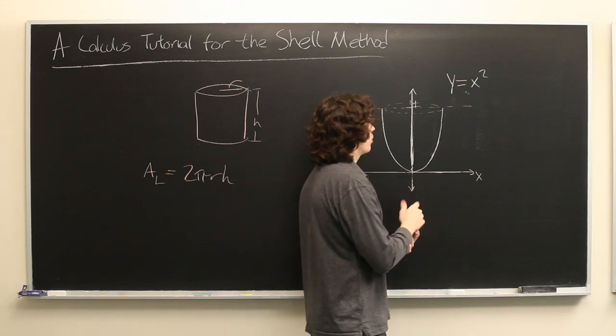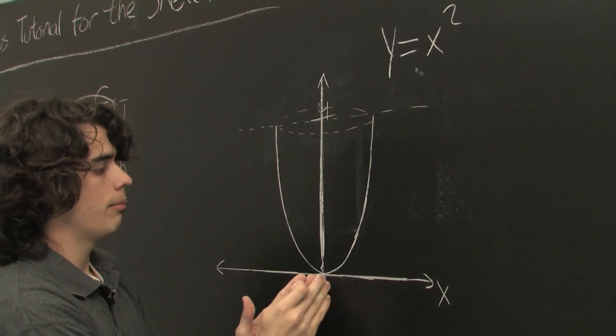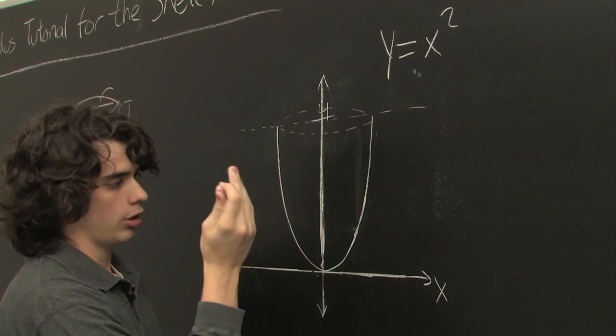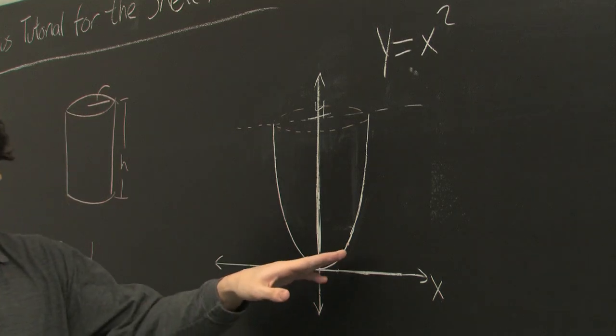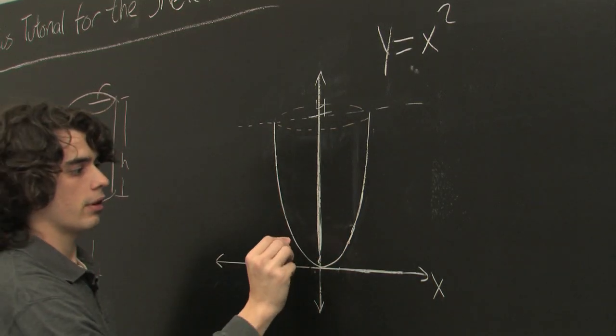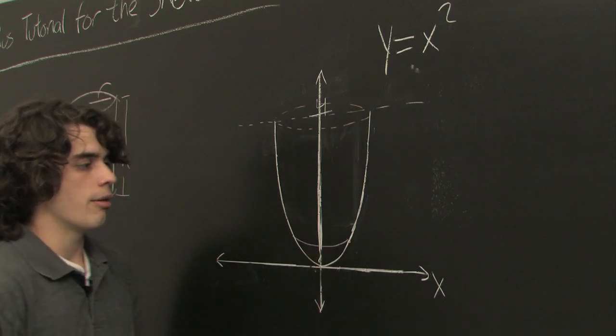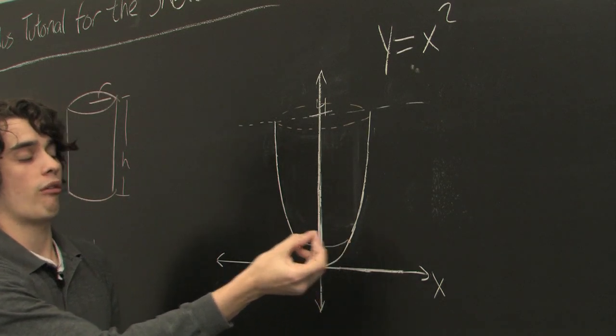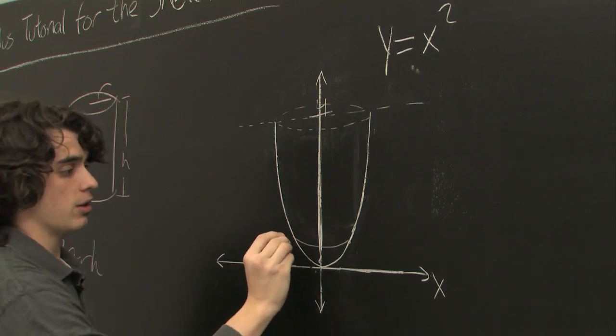Now let's go back to our parabola and pick some value between 0 and 2. It can be anywhere. Look at the point where that lies on the graph, and imagine tracing the path that point would take if you revolve this curve all the way around the y-axis. You'll see that you get a circle.